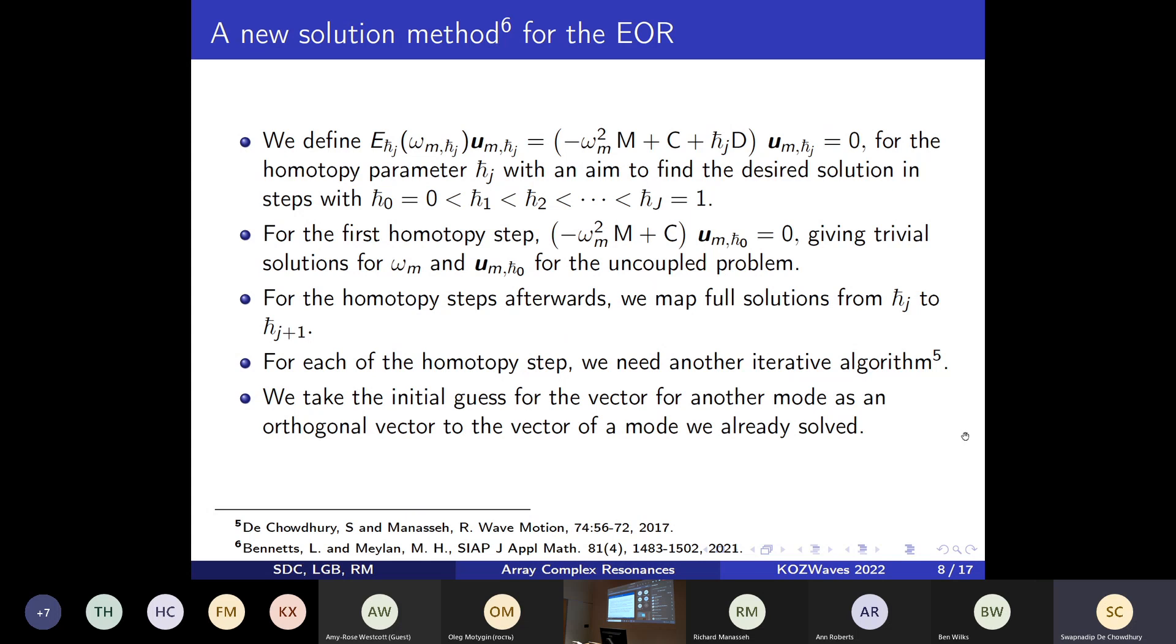To compute the complex resonances for any arrays without exploiting its symmetry properties in its position, we adopt a method from a paper by Bennetts and Mellor. The key to the method is rewriting this equation of resonance involving a homotopy parameter h-bar. When the homotopy parameter h-bar is zero, we have a trivial problem to solve for the complex resonances. Then by slowly varying this homotopy parameter h-bar towards one, which is the final equation we want to solve, it is possible to walk towards the final solution in a certain number of homotopy steps.